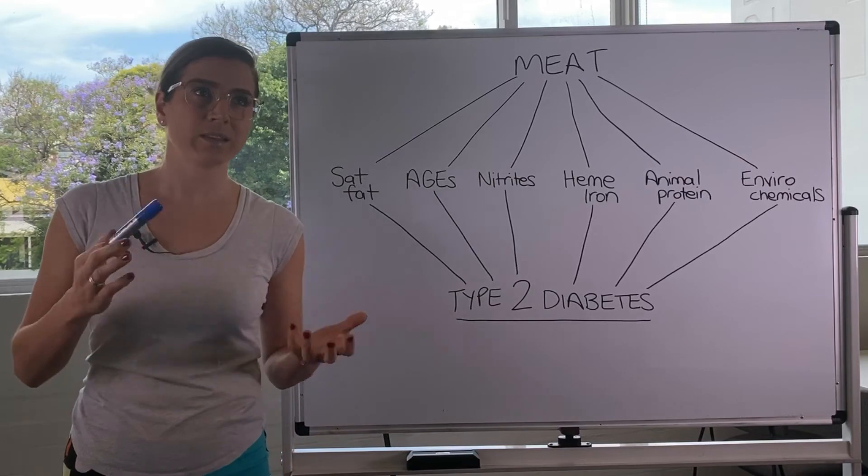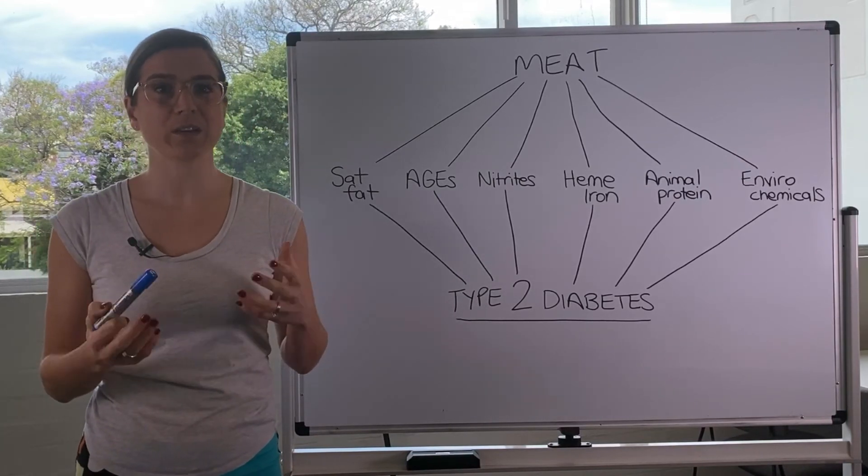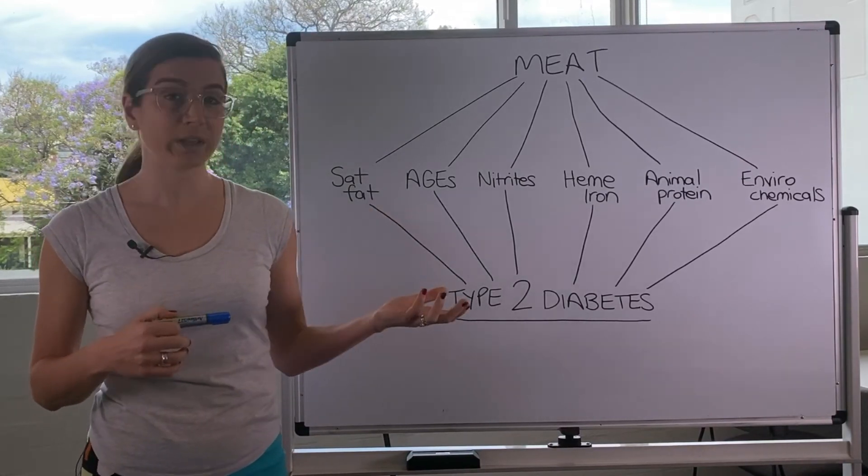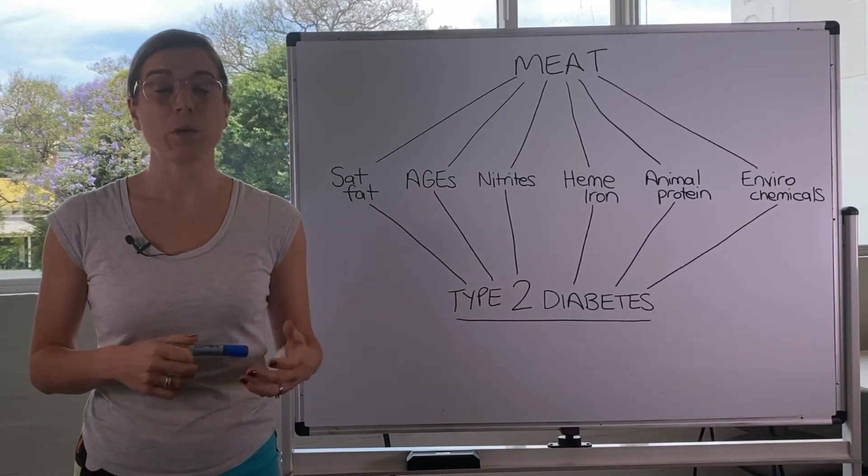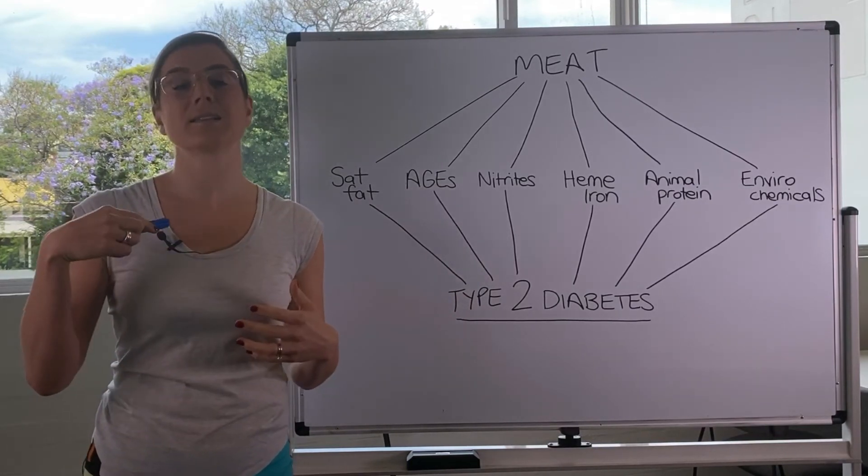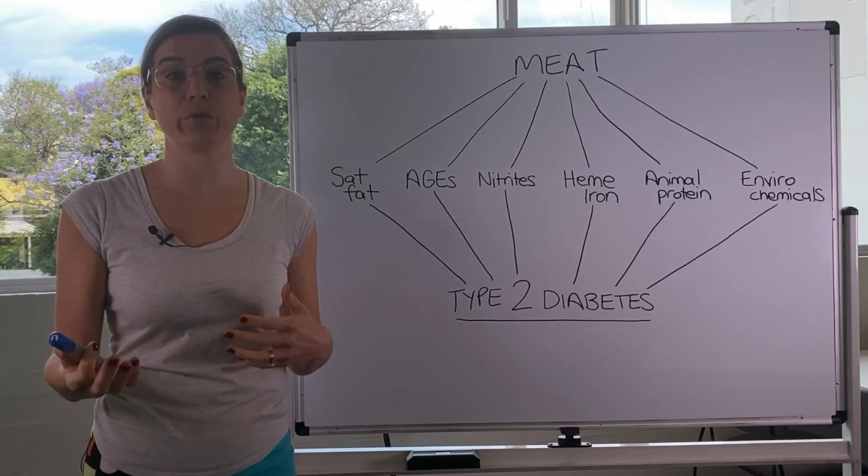And really there can be two things going on here because you're removing the meat, which may potentially be contributing to insulin resistance, but you're also adding in things that can improve insulin sensitivity.